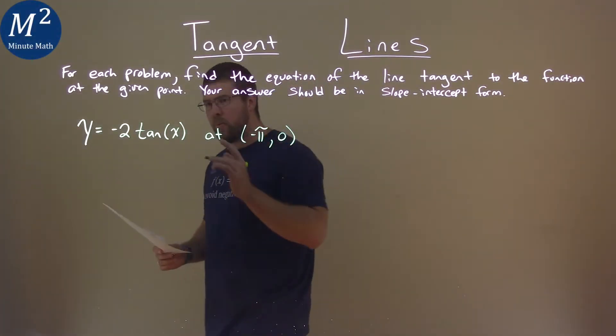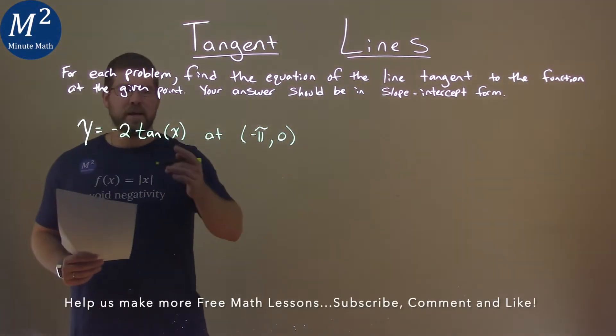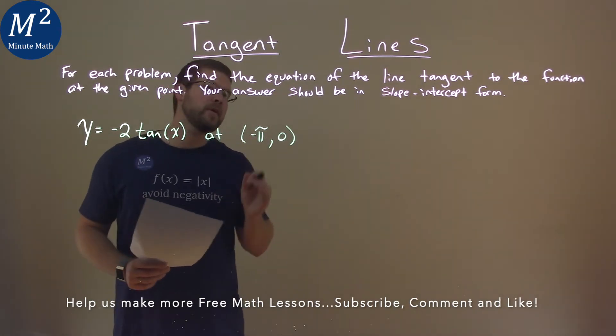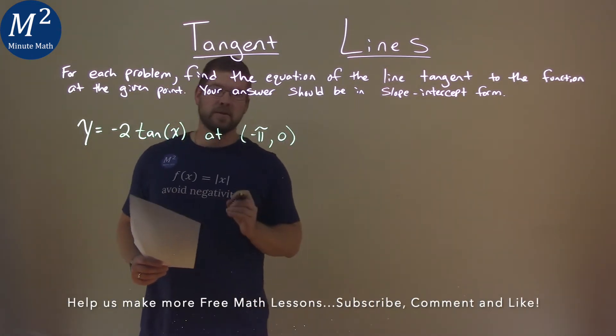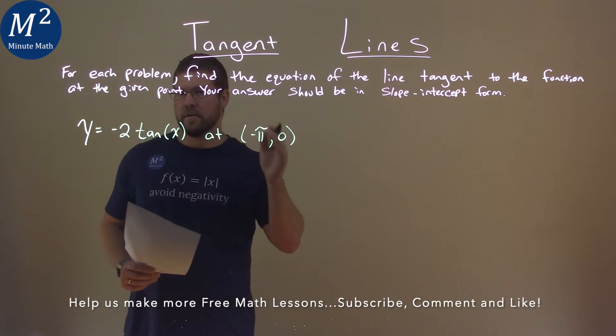We're given this problem right here: y equals negative 2 tangent of x, and we need to find the equation of the line tangent to this function at negative pi comma 0.